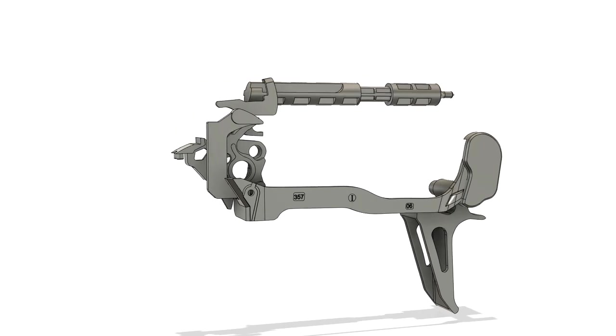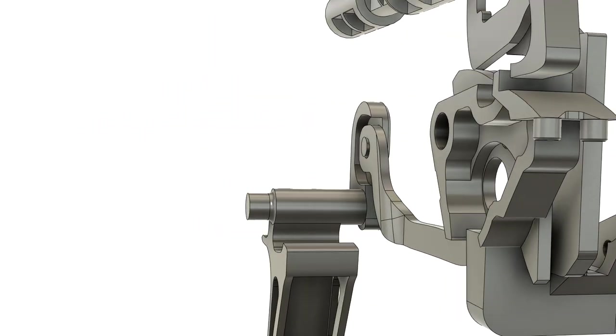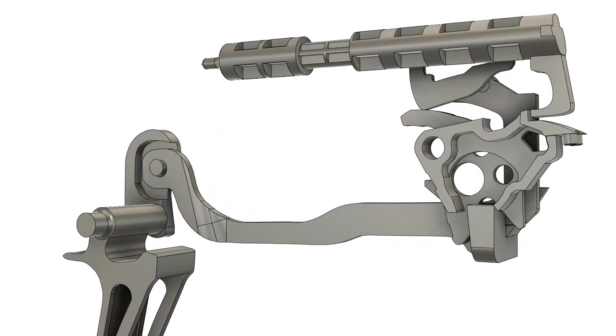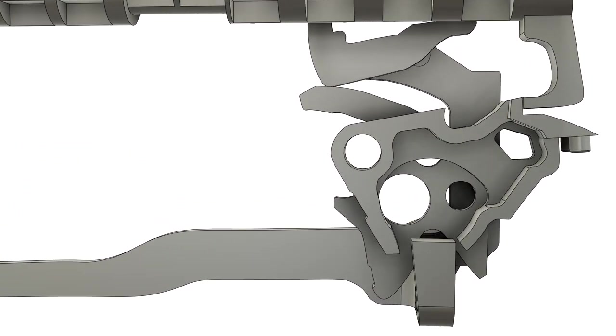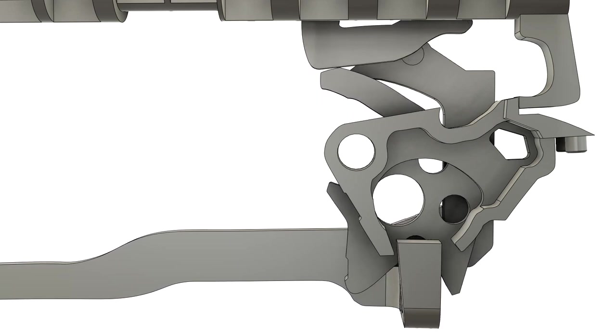We also saw that pulling the trigger 0.09 inches was enough to disengage the striker safety, but was not enough to engage the sear in any way, which means that there is still take up between the disengagement of the striker safety and the trigger bar making contact with the sear.